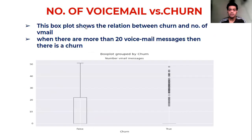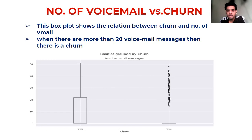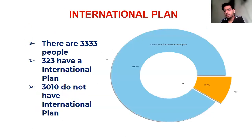A box plot showing the number of voicemail messages versus churn reveals that after a customer sends 20 voicemail messages, there is a notable churn issue. This suggests that customers making 20 or more voicemail messages may be facing some kind of problem, leading them to churn.